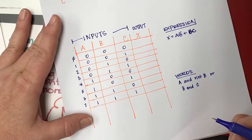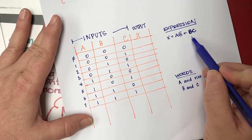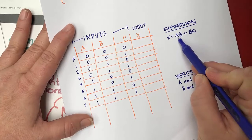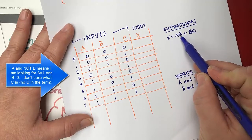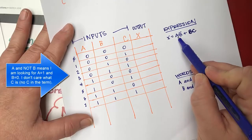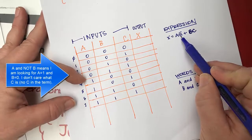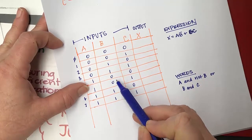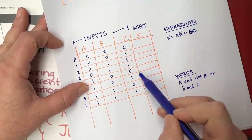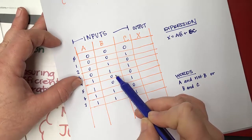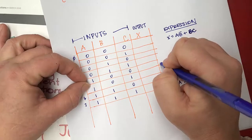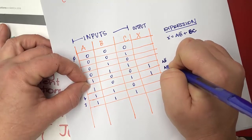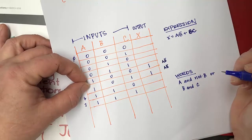Each one of these rows equates to terms in our expression. I'm looking for anywhere where I have A AND NOT B. A AND NOT B means A is one and the B column is zero. Here's where my A's are one, and NOT B would be where B is zero — those two rows. There's no C term in this one, so I don't care what C is. So those two rows get a one in the output column — both are true cases of A AND NOT B.